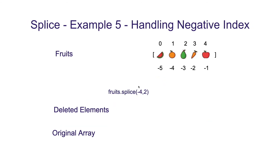In example 5, we are going to use splice with a negative index. Similar to slice, we can use negative indexes in splice as well. Here we use splice with minus 4 and 2, meaning we want to delete 2 elements starting from the 4th-to-last position — that is, elements at position 1 and position 2. The deleted elements are returned and the original array is updated accordingly.